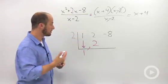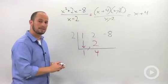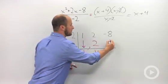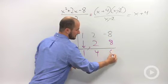2 plus 2 is 4. And then repeat. 2 times 4, this becomes 8. Negative 8 plus 8 is 0.